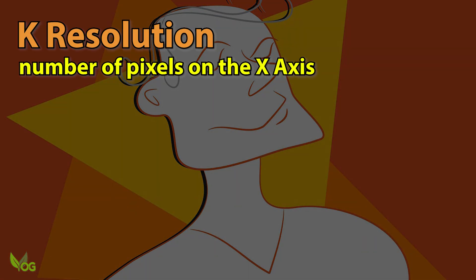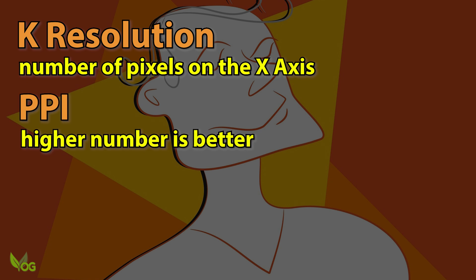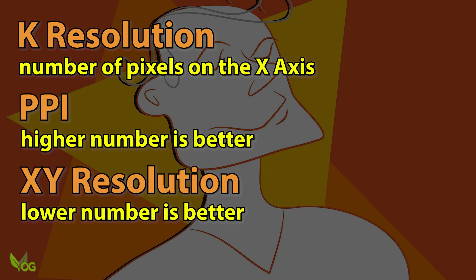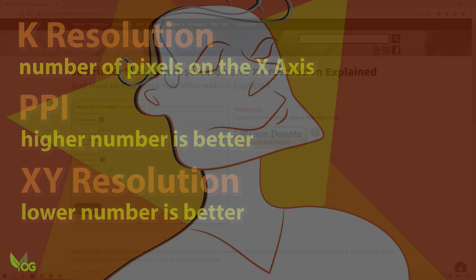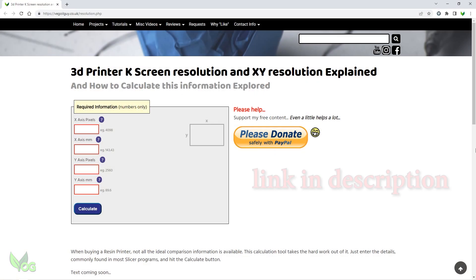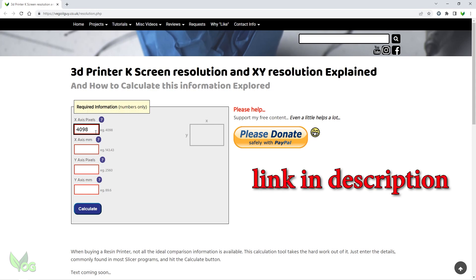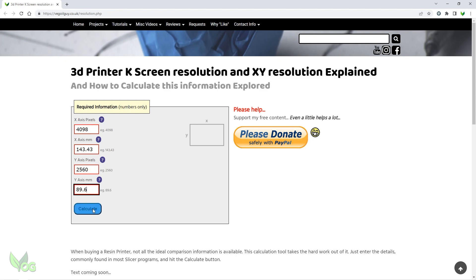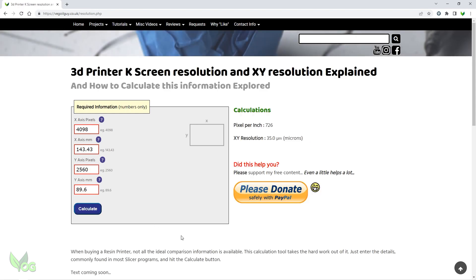You now know that a K resolution merely expresses how many pixels fit along the X-axis. A larger PPI figure is better than a small one, and conversely a lower XY resolution is better than a high one. And if maths isn't your thing and you need to calculate these numbers, I've added a dedicated page to my website that will do it all for you — and if you use it, please consider a small donation. Even a little helps a lot.